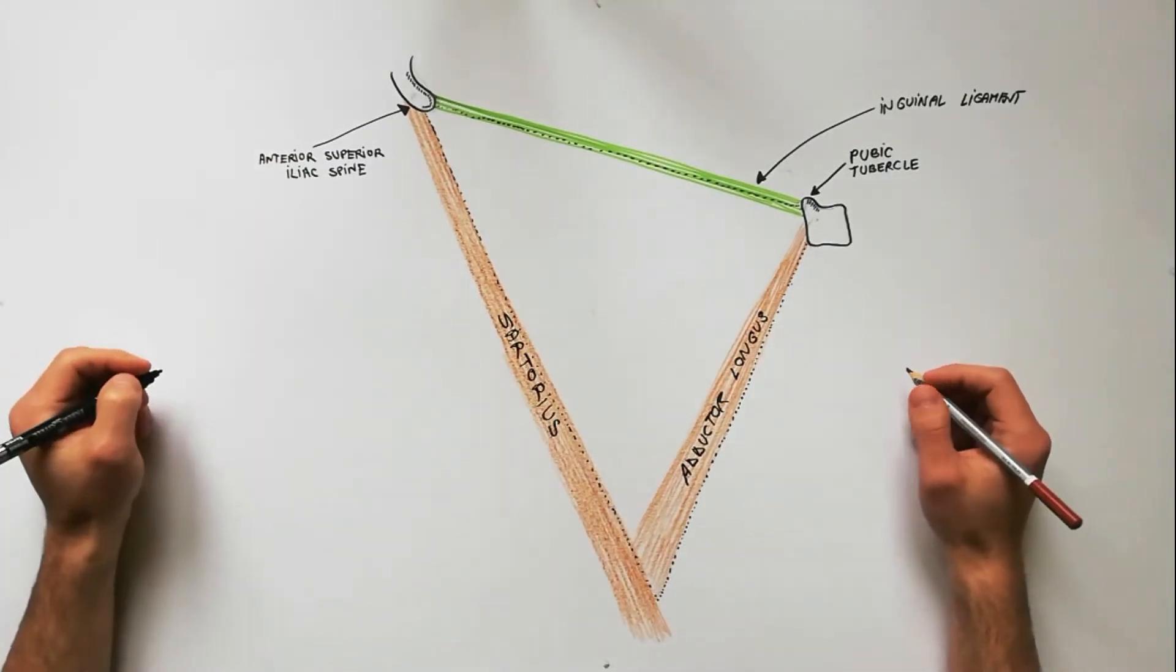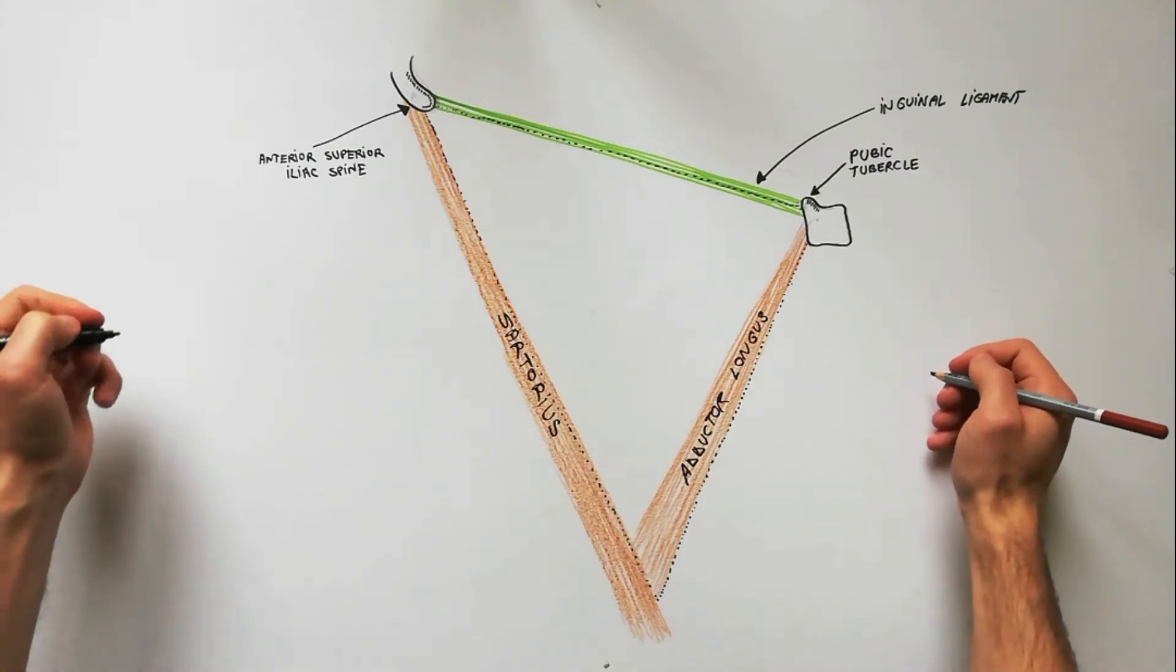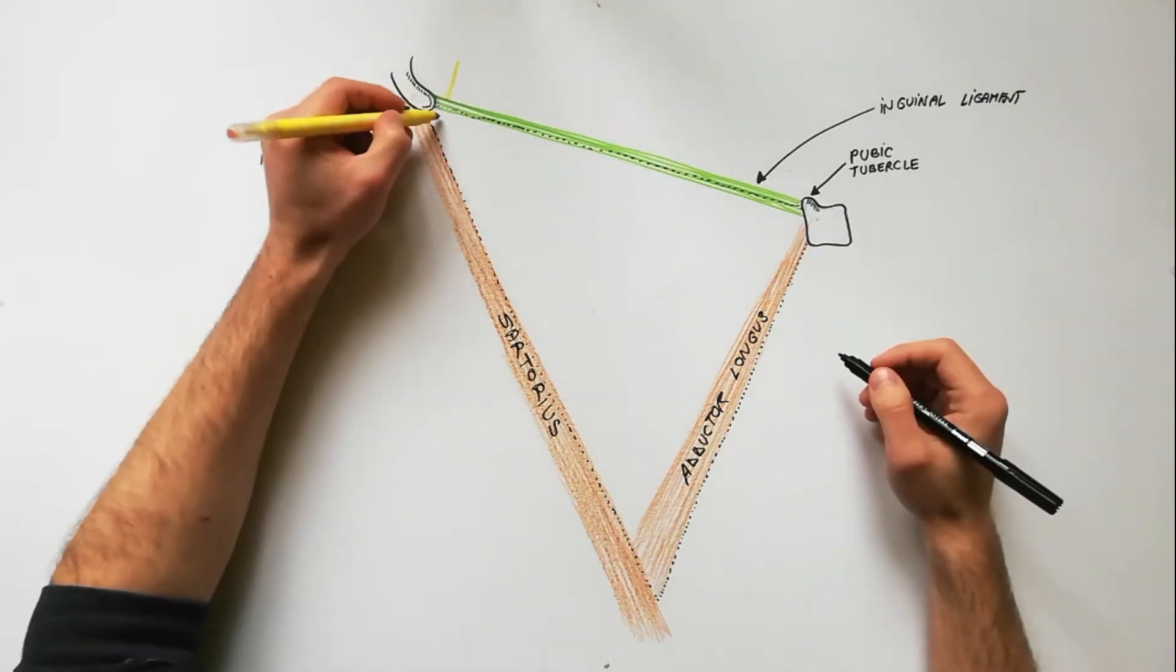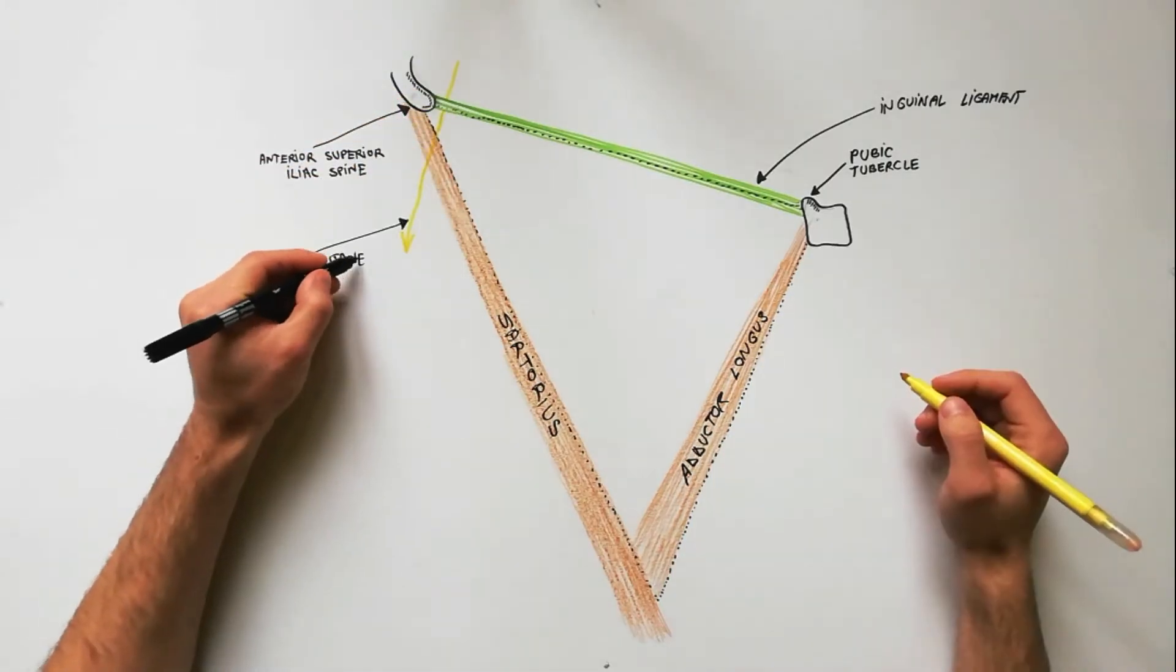The following structures are contained within the femoral triangle from lateral to medial. The lateral cutaneous nerve of thigh crosses the lateral angle of the triangle.